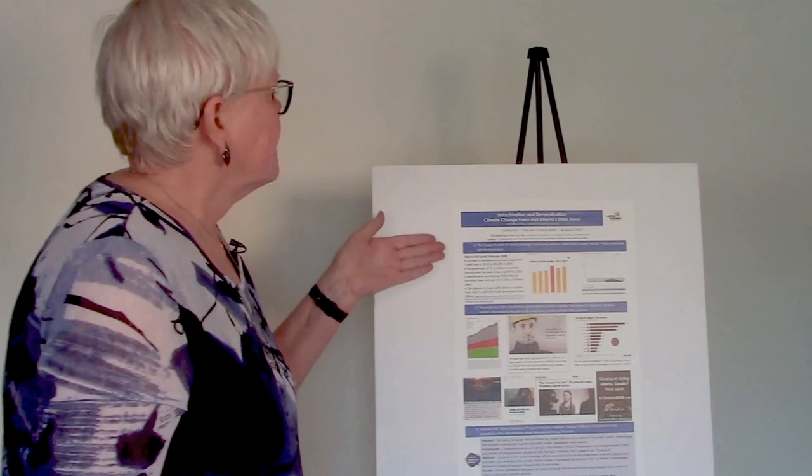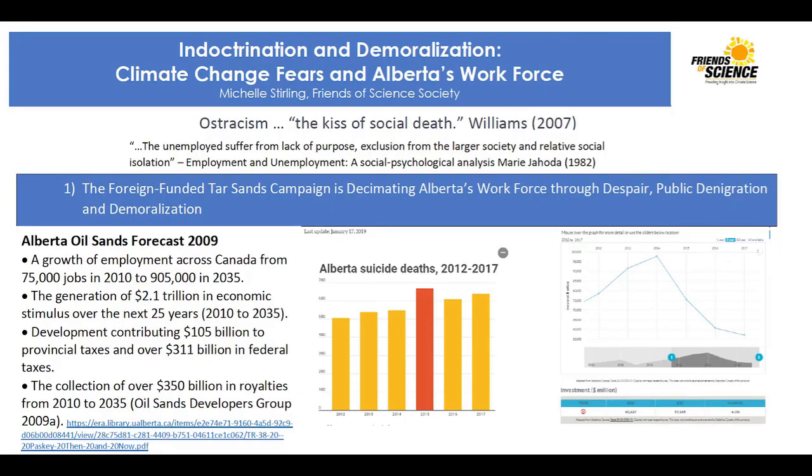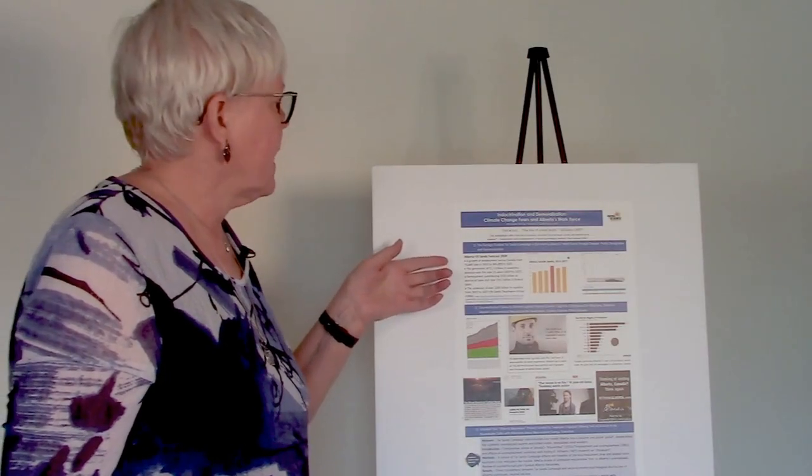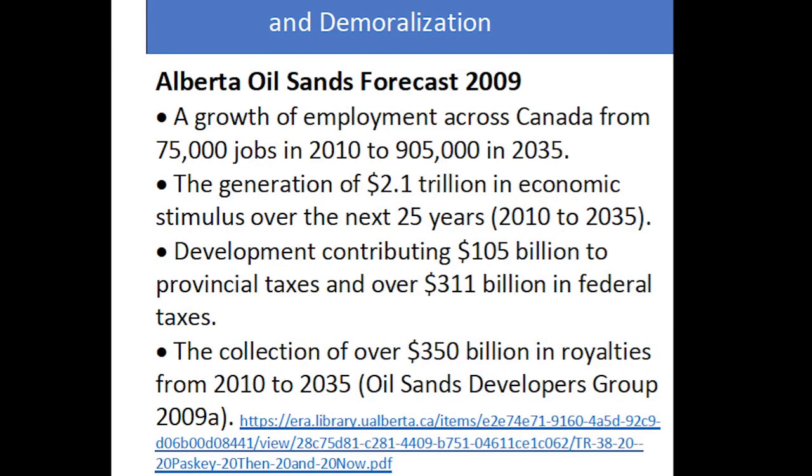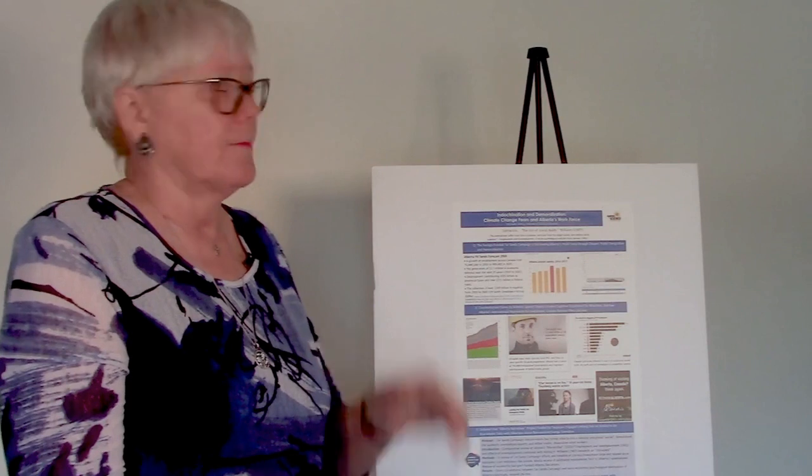In the first section of the poster, it's about the foreign-funded Tar Sands Campaign decimating Alberta's workforce through despair, public denigration, and demoralization. The Alberta oil sands forecast for 2009 was that there would be a growth of employment across Canada from 75,000 jobs in 2010 to 905,000 jobs in 2035, the generation of $2.1 trillion in economic stimulus over the next 25 years, the development contributing $105 billion to provincial taxes and over $311 billion in federal taxes, and the collection of over $350 billion in royalties from 2010 to 2035.